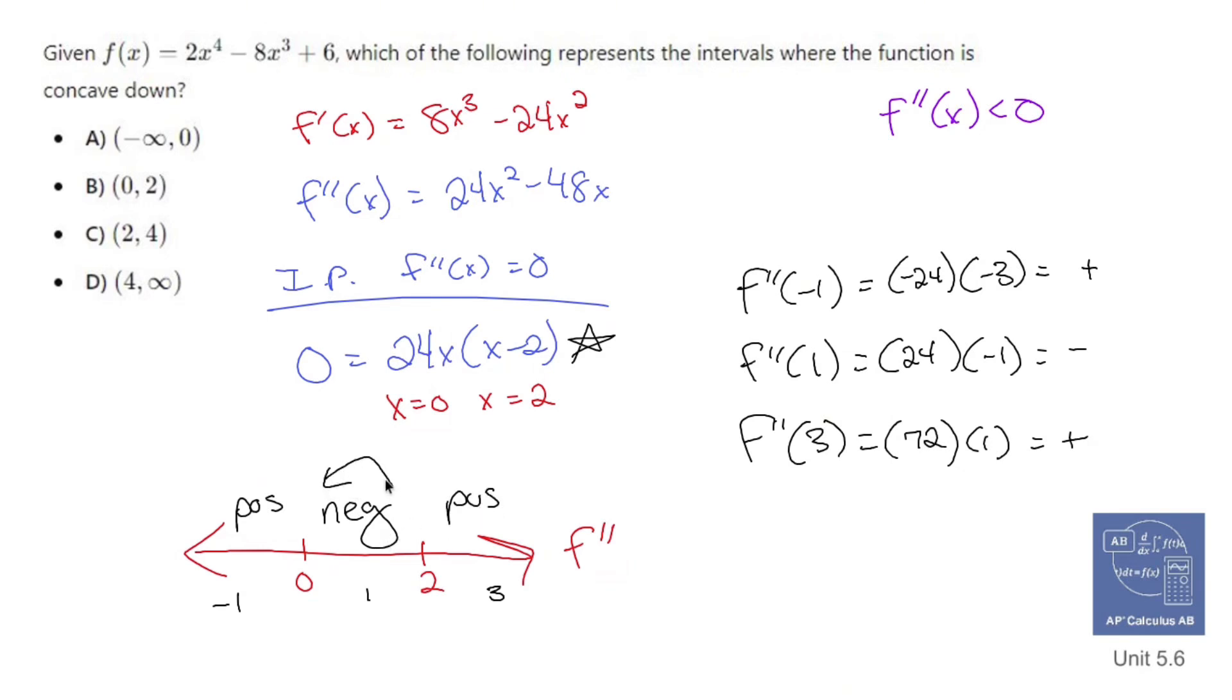So you are where we're concave down between 0 and 2, which is B. Okay. So yeah, that's how you do it. Fun stuff.